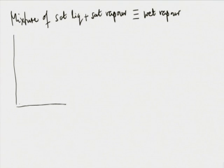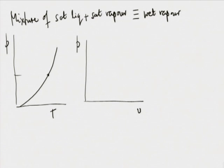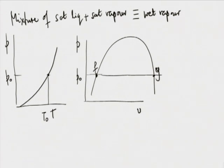Since we cannot show it on the P-T diagram properly, we go to a P-V diagram. At the given pressure P naught, which lies exactly on the saturation line, the F point represents saturated liquid and the G point represents dry saturated vapour. Our state will lie anywhere between these two points. That is the range.